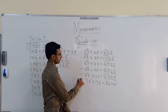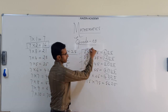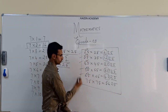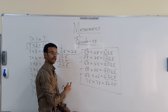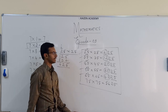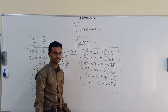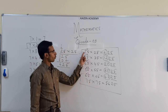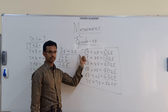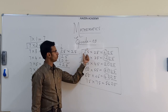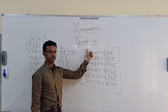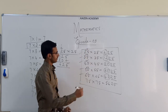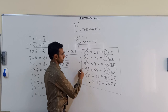When you see this type of number in an examination, make sure to use this trick. It is called 'Ekadhikena Purvena' in Sanskrit, which means 'one more than the previous number' — so you take the tens digit and multiply by the next consecutive number. That is how this shortcut has to be utilized.